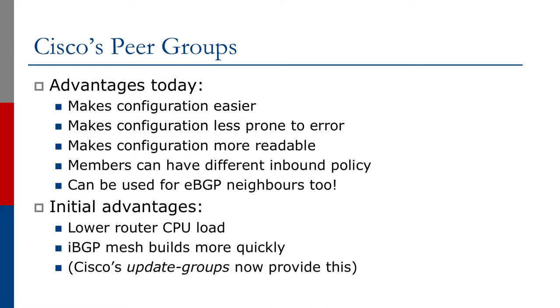When Cisco first introduced peer groups into IOS, it also lowered the router CPU load and helped the IBGP mesh build much more quickly. More recently, internal coding improvements in IOS introduced something called an update group, which automatically works out which peers have the same outbound policy and groups them together. So even though peer groups may seem to have been replaced by Cisco's update groups, many operators still find peer groups extremely useful for ease of operation of the network.